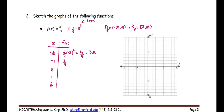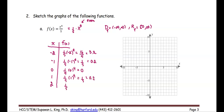At negative 1, it is 1 over 5 times negative 1 to the fourth power. Recall the even power will make a negative number multiplied by itself an even number of times result in a positive quantity, so this is 1 over 5, which is 0.2. Next, 1 over 5 times 0 to the fourth is 0. Then 1 over 5 times 1 to the fourth is 1 over 5, the same as the function value at negative 1. And at x equals 2, 1 over 5 times 2 to the fourth is 16 over 5, or 3.2.